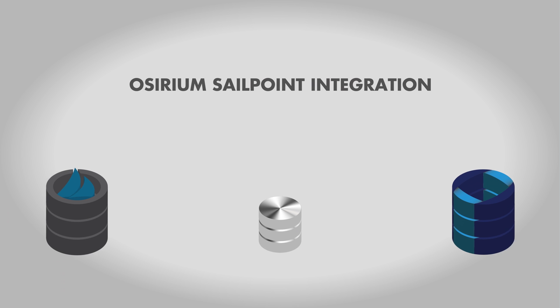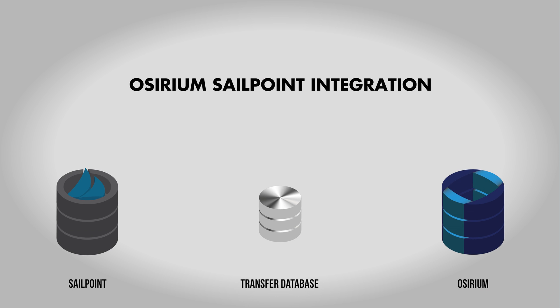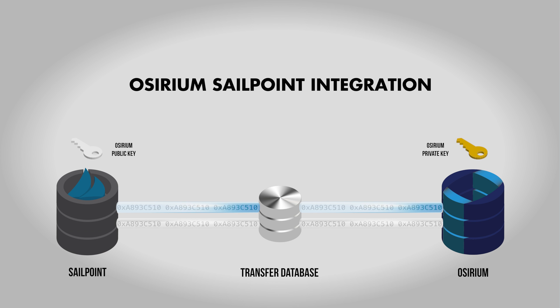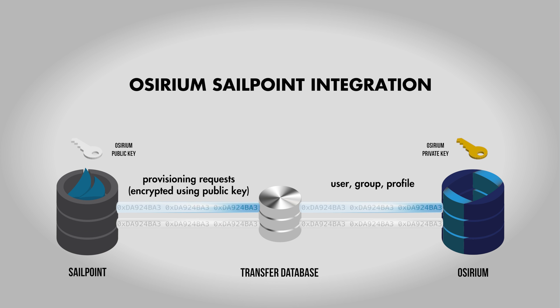The integration is based around a shared transfer database. Assyrium writes into defined tables and SailPoint delivers provisioning requests for another. On the provisioning side, SailPoint can give us all the details including the required password. They encrypt these against a public key that Assyrium provides. In this way, SailPoint can be sure that only this instance of Assyrium can read the passwords — hence security is well covered.